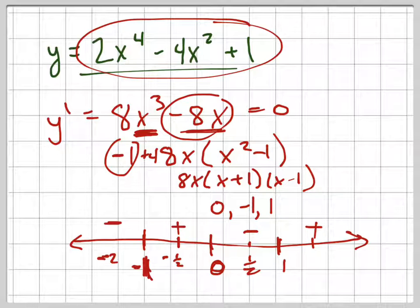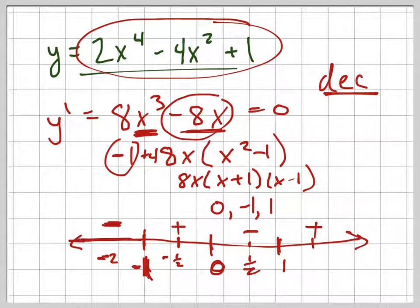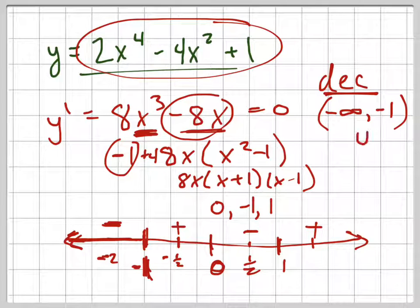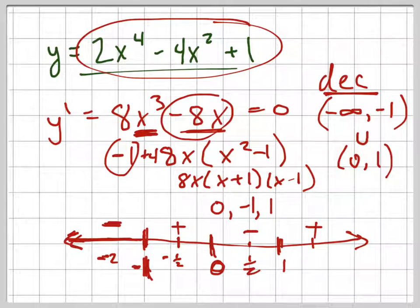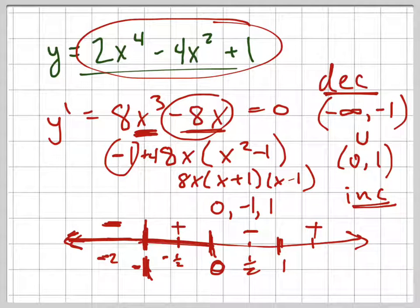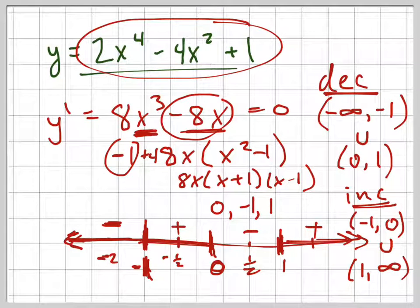So where is the graph? Where is this function decreasing? It's decreasing from negative infinity to negative 1, and from 0 to 1. And where is it increasing? It's increasing from negative 1 to 0, union from positive 1 to positive infinity. That's when it's increasing.